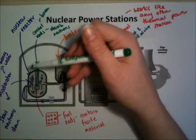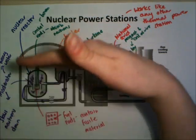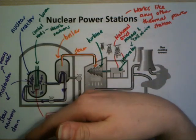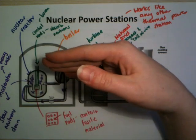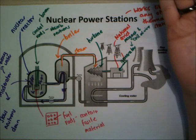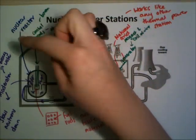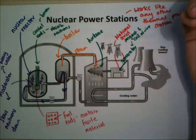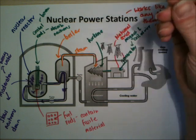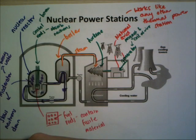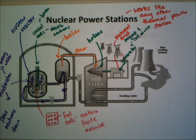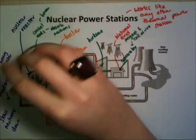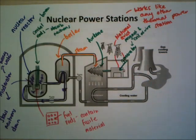The control rods can be moved up and down to vary how much they slow the reaction rather than stopping it completely. In the event of a disaster like an earthquake, the control rods are controlled by gravity — if the electricity fails, gravity takes over and the control rods slam down, mopping up all the neutrons and stopping the reaction. This is how they make the reactor safe.